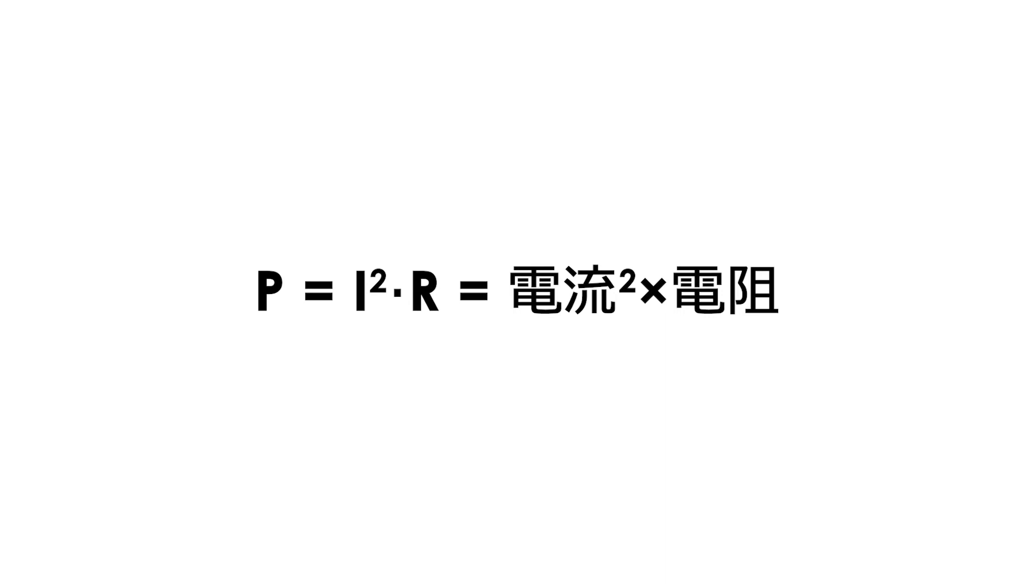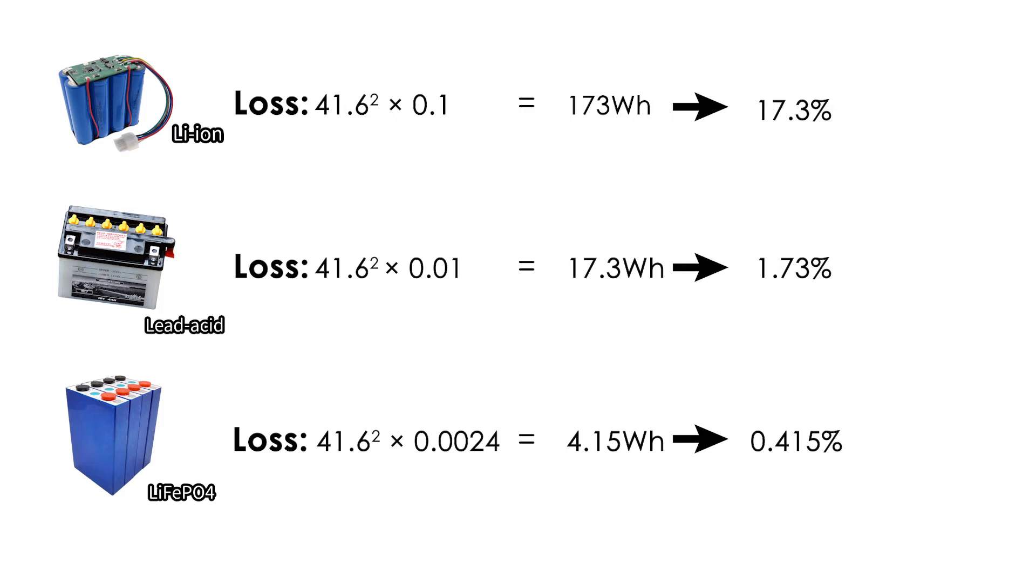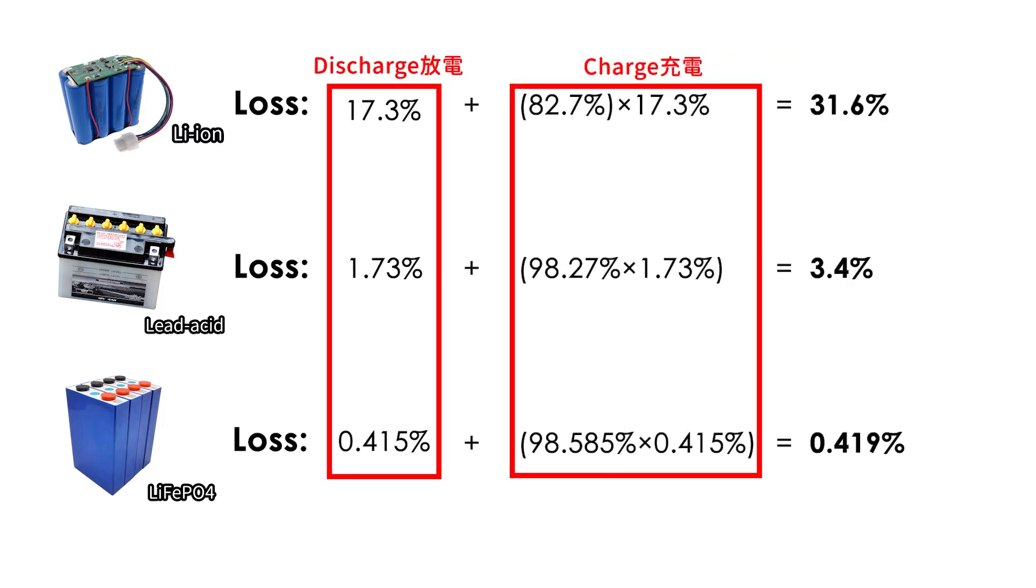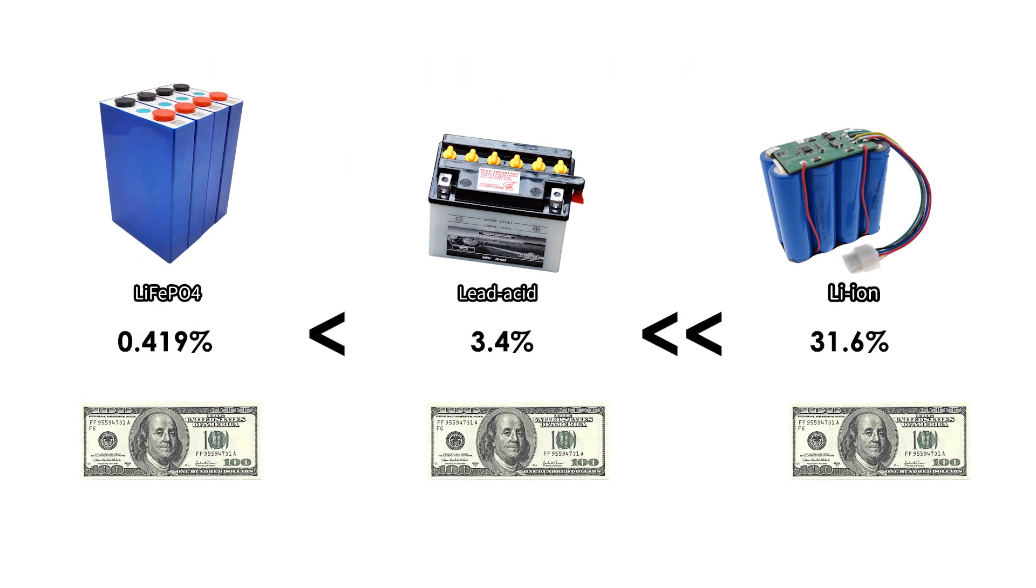The internal resistance loss of the lithium-ion battery is 173Wh, and the loss rate is 17.3%. The internal resistance loss of the lead-acid battery is 17.3Wh, and the loss rate is 1.73%. The internal resistance loss of the lithium-ion phosphate battery is 4.15Wh, and the loss rate is 0.415%. Taking into account charging and discharging, the losses due to the internal resistance are doubled. So when choosing a battery, also take into account the difference in electricity bills due to internal resistance losses.